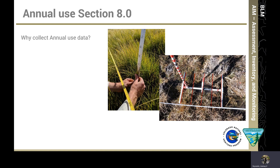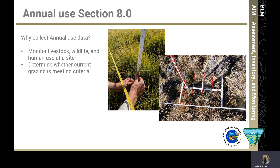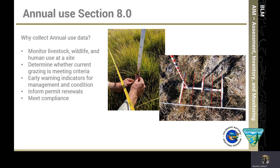Annual use is neither core nor contingent. The annual use methods fall into their own category to address use by grazing ungulates and humans in a given lentic area. We collect annual use data to monitor livestock, wildlife, and human use at a site; determine whether current grazing criteria meets our thresholds; serve as an early warning indicator for management and condition; inform permit renewals; and help us meet legal compliance.